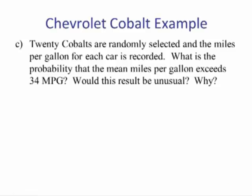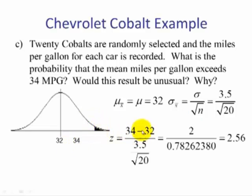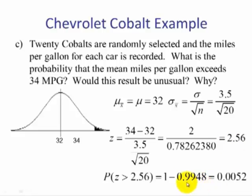Part C: 20 Cobalts are randomly selected and the miles per gallon for each car is recorded. What is the probability that the mean miles per gallon exceeds 34 miles per gallon? Now we have a sample size of 20. The mean of this distribution equals the population mean, and the standard deviation is 3.5 divided by the square root of 20. We change 34 to a z-score — 34 minus the mean divided by the standard error — and we get 2.56. Using table 5, we look up 2.56 and get 0.9948. We do 1 minus 0.9948 because we want area to the right, which gives 0.0052.